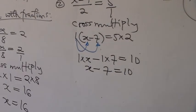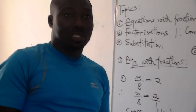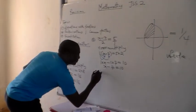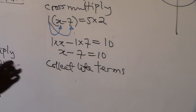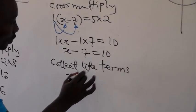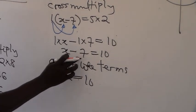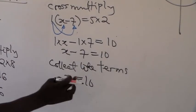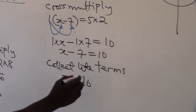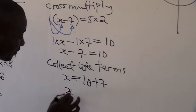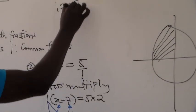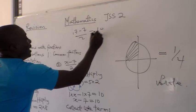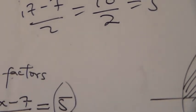Collecting like terms means you arrange so that on the left-hand side you have variables of the same kind and on the right-hand side you have constants. We leave x on the left-hand side. The negative 7 crosses to the right-hand side and the sign changes to positive, so we have x equals 10 plus 7, which is 17. Checking: if we put 17 back, 17 minus 7 over 2 gives us 10 over 2, which equals 5. Correct.